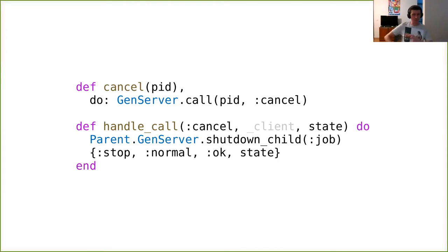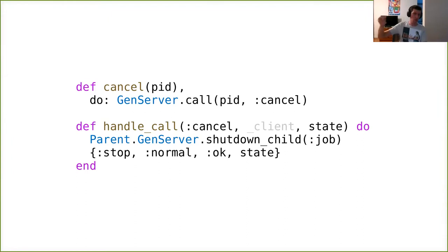For cancellation — when an end user hits the cancel button, we get the PID of the query manager and do a regular GenServer call. In the handle_call, I invoke Parent.GenServer.shutdown_child passing the child ID. This synchronously stops the child, removes it from internal records, and consumes the exit message. When I invoke shutdown_child, I will not get the handle_child_terminated callback — this is by design. Then I can stop myself. That's pretty much it.